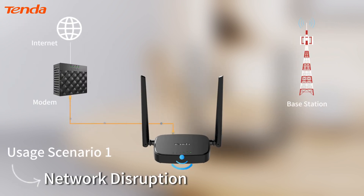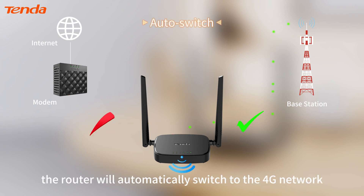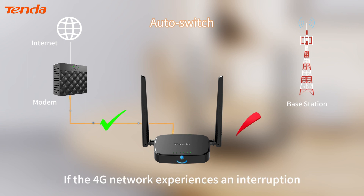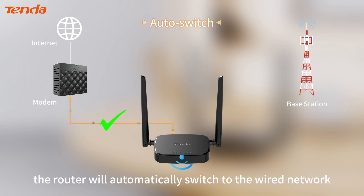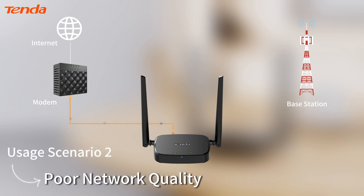Usage scenario one: network disruption. If the wired network goes down, the router will automatically switch to the 4G network. If the 4G network experiences an interruption, the router will automatically switch to the wired network.